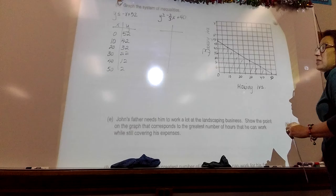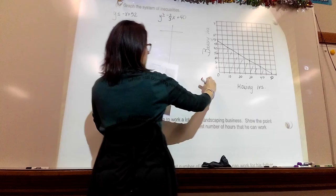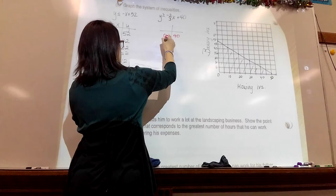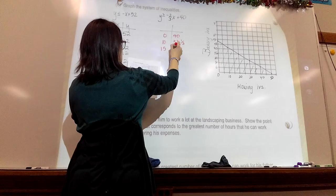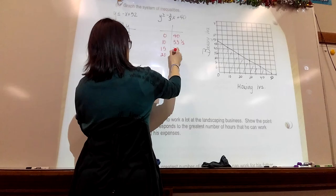Okay, then I'm going to go, and I'm going to graph the other one, and I'm going to do it in a different color. I hope you can see this color, but I'm going to do it in a different color. Again, I picked the same points to work with. I picked 0 and 40, 10 is 33 and a third, 15 was 30.